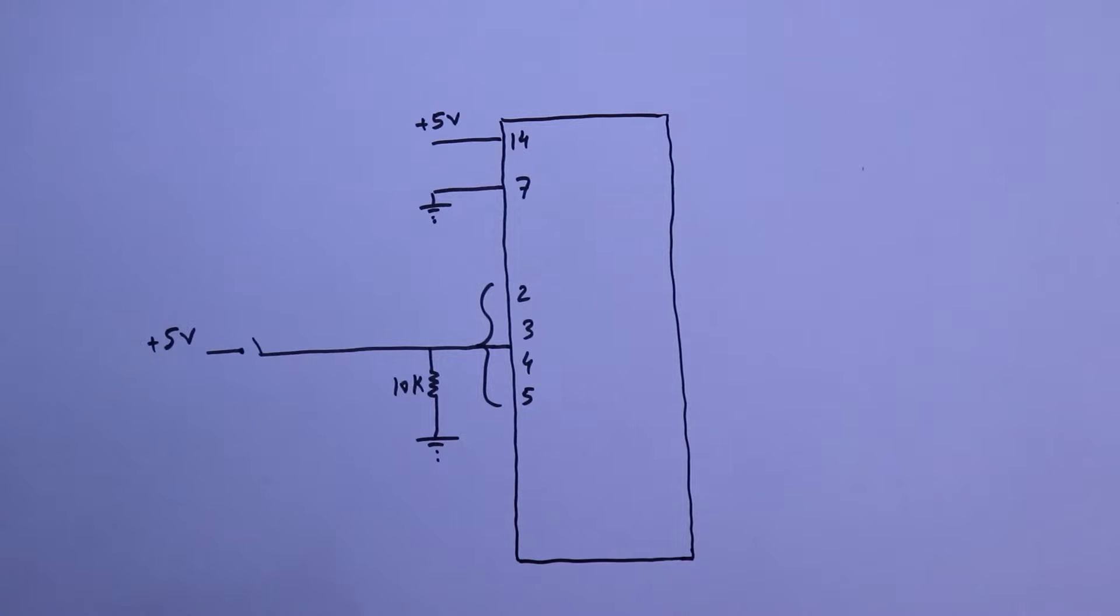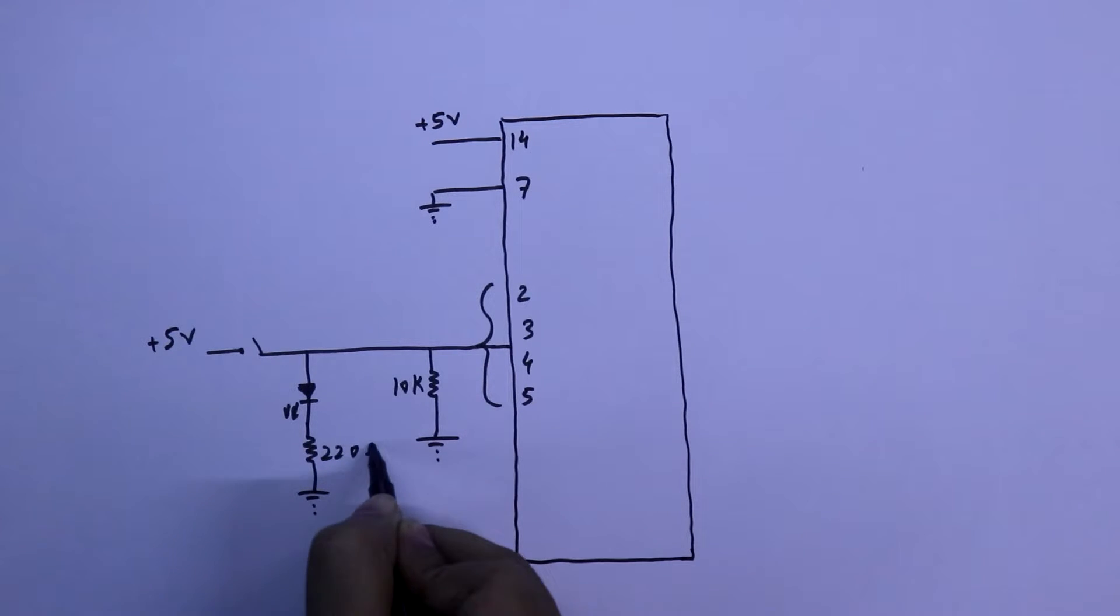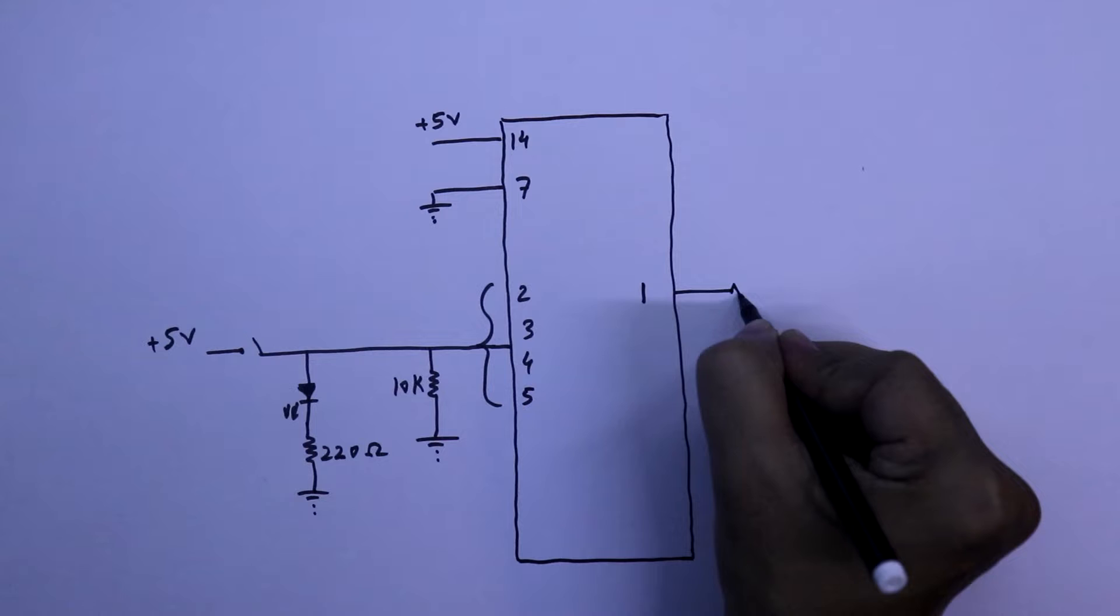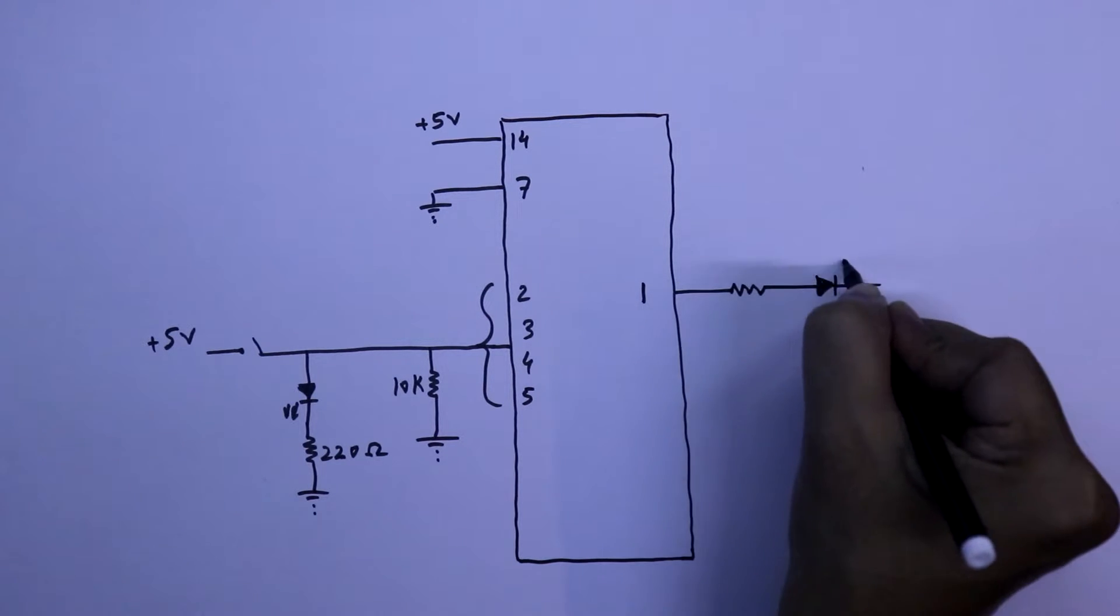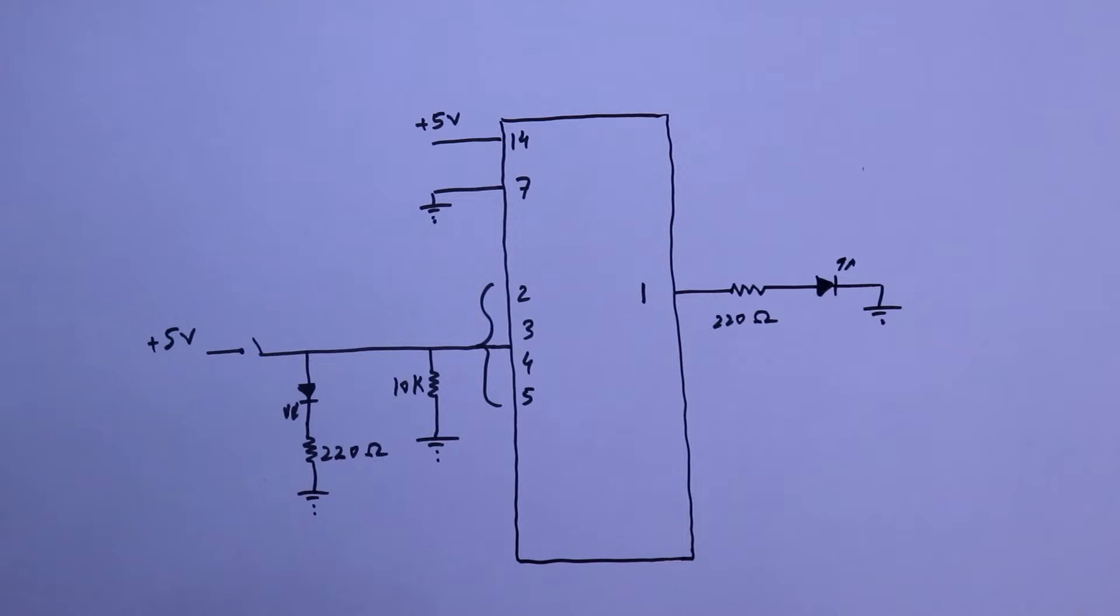Now to see the input we are connecting LED with its series resistor. The value of series resistor is 220 ohms. The output pin, pin number 1, here also we are connecting an LED. So this is a very simple connection. Now we will see this on breadboard.